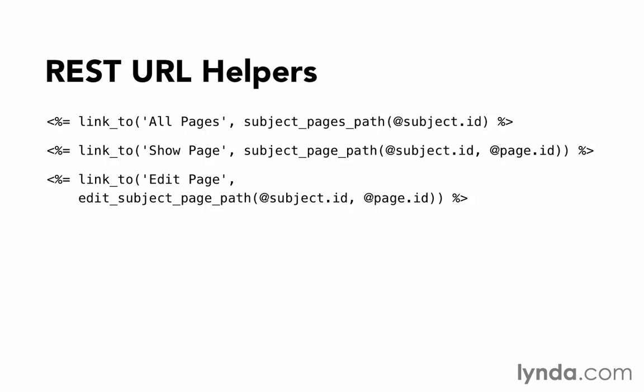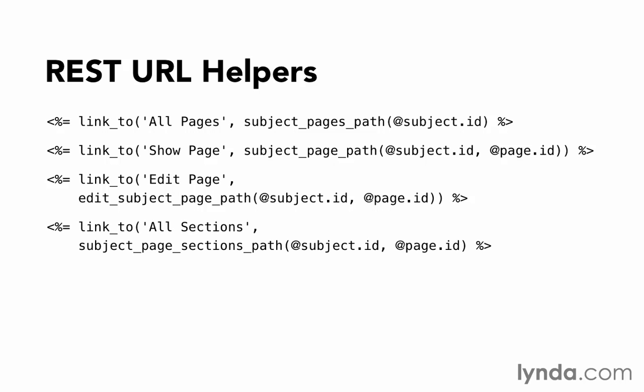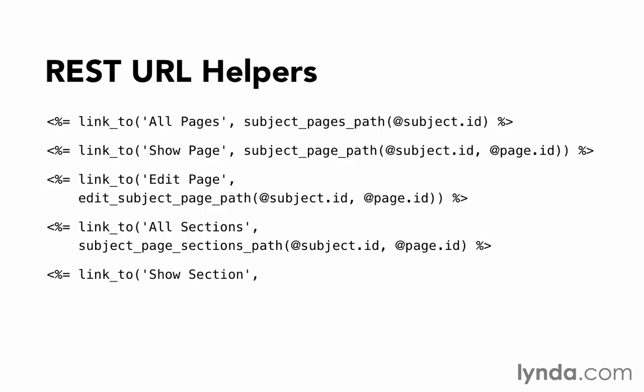You'll notice, though, that we're starting to get some very long method names. That's especially true when we start looking at sections. For example, if our sections were nested inside pages, which was nested inside subjects, then we would need to keep track of all three. To view all sections, we'd have subject_page_sections_path and pass in two arguments. If we wanted to view a particular section, we'd pass in three arguments, because now we need to know the subject ID, the page ID, and the section ID. For that reason, three is really the limit you should shoot for with your nesting. Two is ideal, three is allowable, and anything over that starts to be hard to manage.